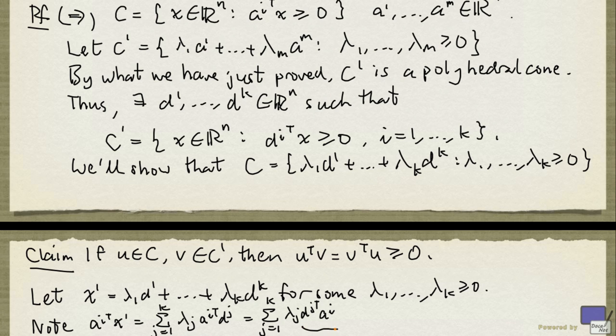Now let's concentrate on this. Since C' contains any of these a_j, a_j must satisfy all these inequalities. And so we can say that this quantity here is going to be at least zero. And since λ_j is non-negative, we can conclude that this sum here is going to be non-negative. And that implies that x' is in C.